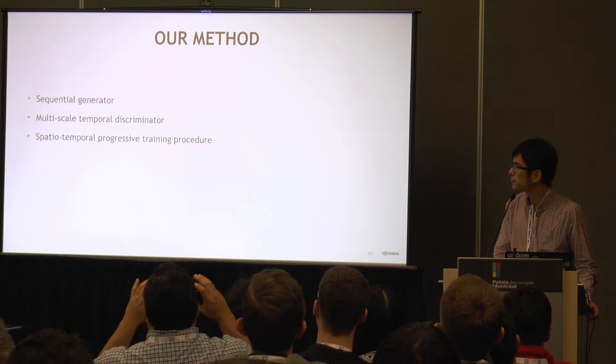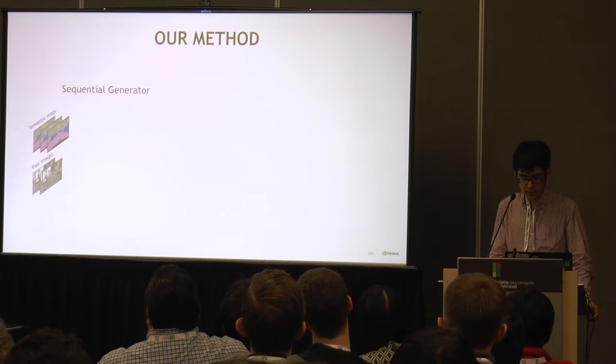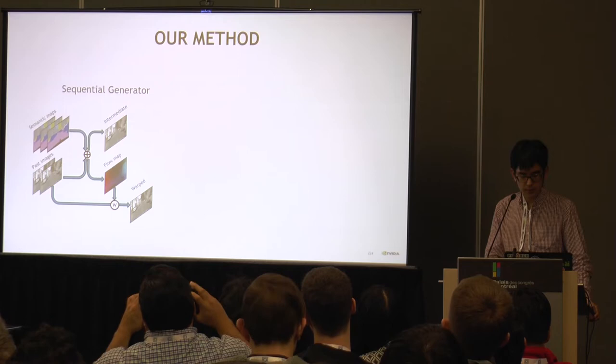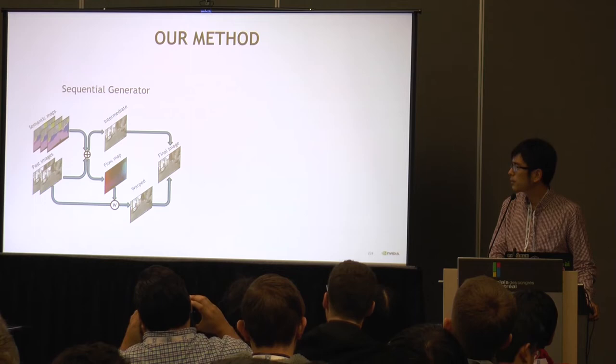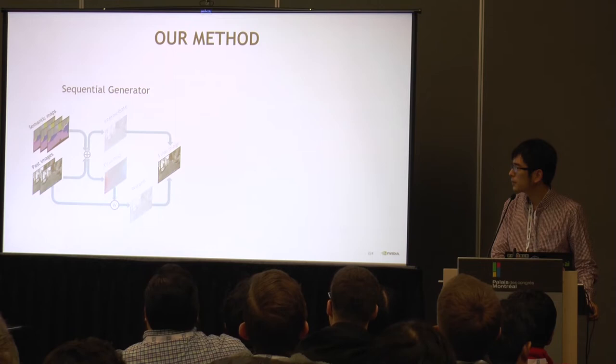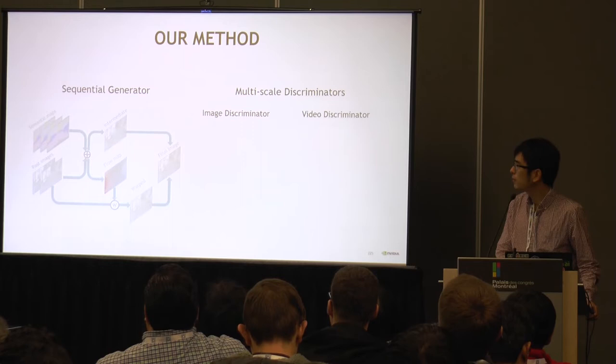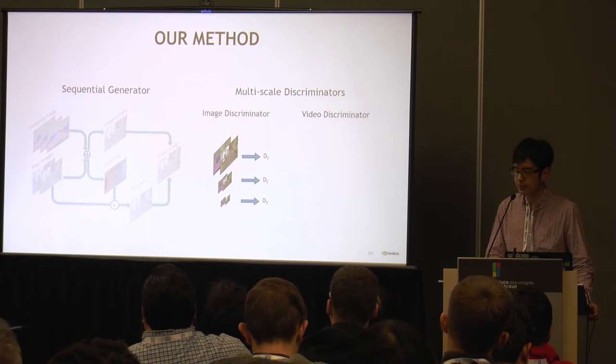Our generator generates frames sequentially in the video. It takes the semantic maps and past frames and tries to generate intermediate frames and a flow map. The flow map is then used to warp the previous frame and combine with the intermediate frame using a mask to generate the final frame. This frame then becomes the input when generating the next frame, and so on. For discriminators, we have two of them — one for image and one for video. The image discriminator concatenates input maps with output maps and is multi-scale in the spatial domain.